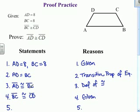So if you take a look at what you have, you have AD congruent to BC. You also have BC congruent to CD. Both AD and CD are congruent to BC. They're congruent to the same segment, so they must be congruent to each other.